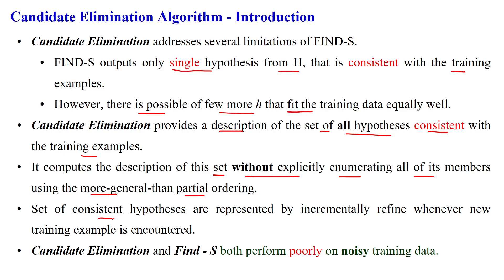This set of consistent hypotheses is represented by incrementally refined iterations. Suppose we find hypothesis H1 with some attribute values; it will be refined in the next iteration. We apply iterations with respect to each and every training example. As iterations increase, the hypothesis consistency keeps refining as more training examples are encountered from the dataset.